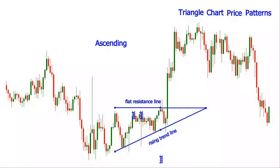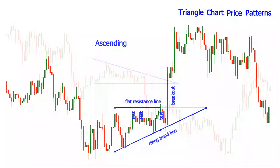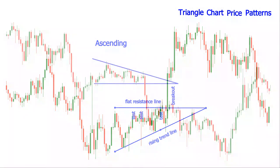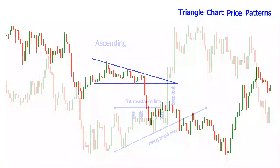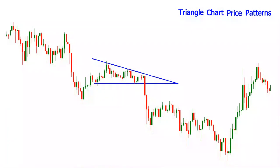The descending triangle pattern is formed by a descending trend line intersecting with a flat support level. The repeated attempts of the sellers to push the price down can result in a breakdown through the support line.